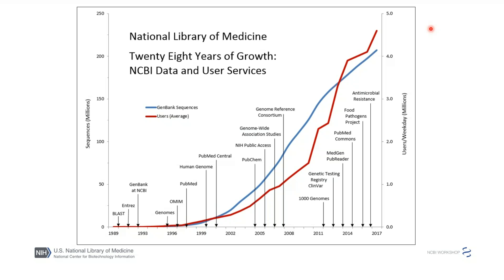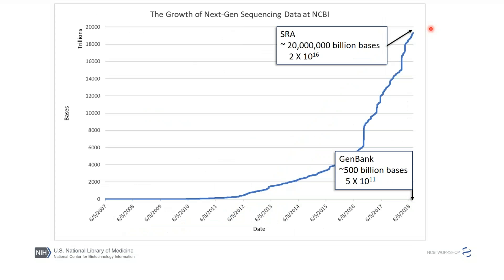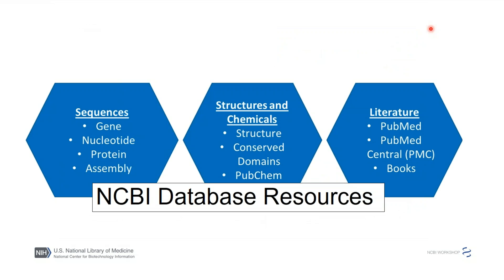The growth of the next-generation sequencing data in NCBI is dramatic. It's part of our Sequence Read Archive database and it dwarfs GenBank. GenBank would not even appear as a point on this graph — there are 5×10¹¹ bases in GenBank, but 2×10¹⁶ bases present as next-gen data at NCBI.